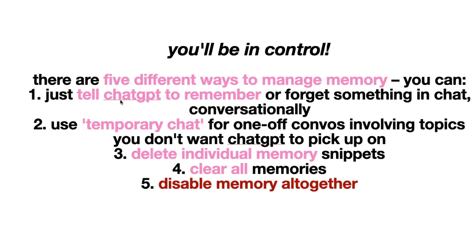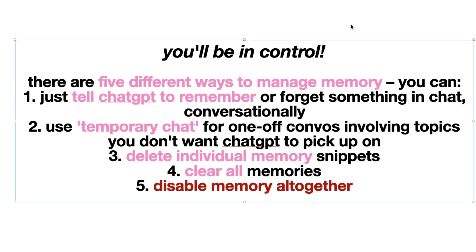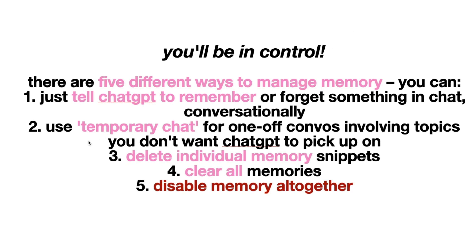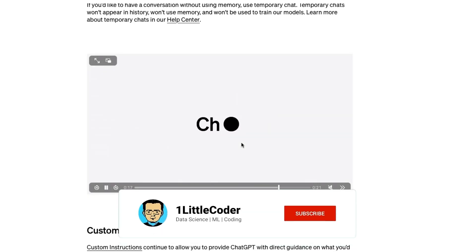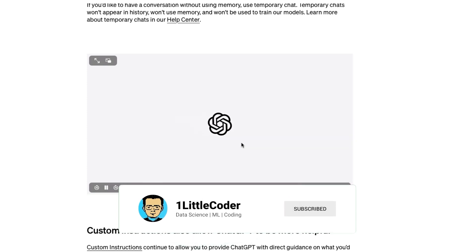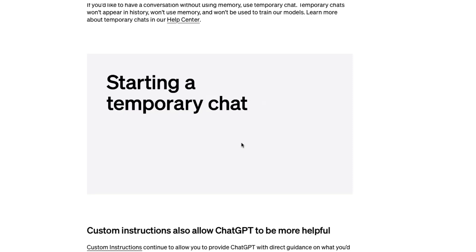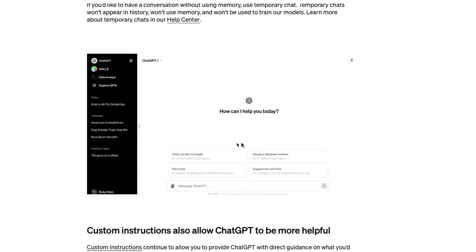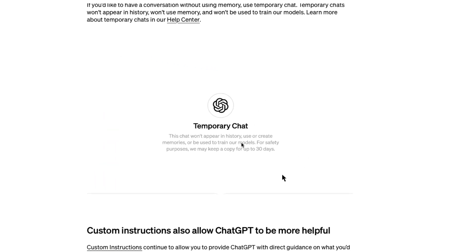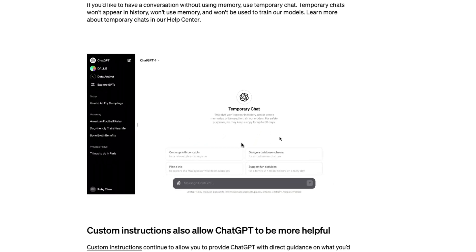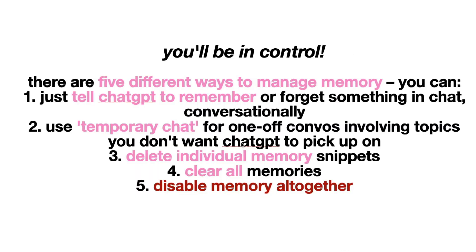The first way is you explicitly tell ChatGPT to remember something — you can say 'January 1st is my birthday, remember that.' You can also explicitly tell ChatGPT to forget something in the chat. The second thing is a feature called temporary chat, where you can chat without having anything stored in memory. This is almost equivalent to the incognito mode of your browser — whatever happens in that conversation does not go into your permanent ChatGPT memory profile.